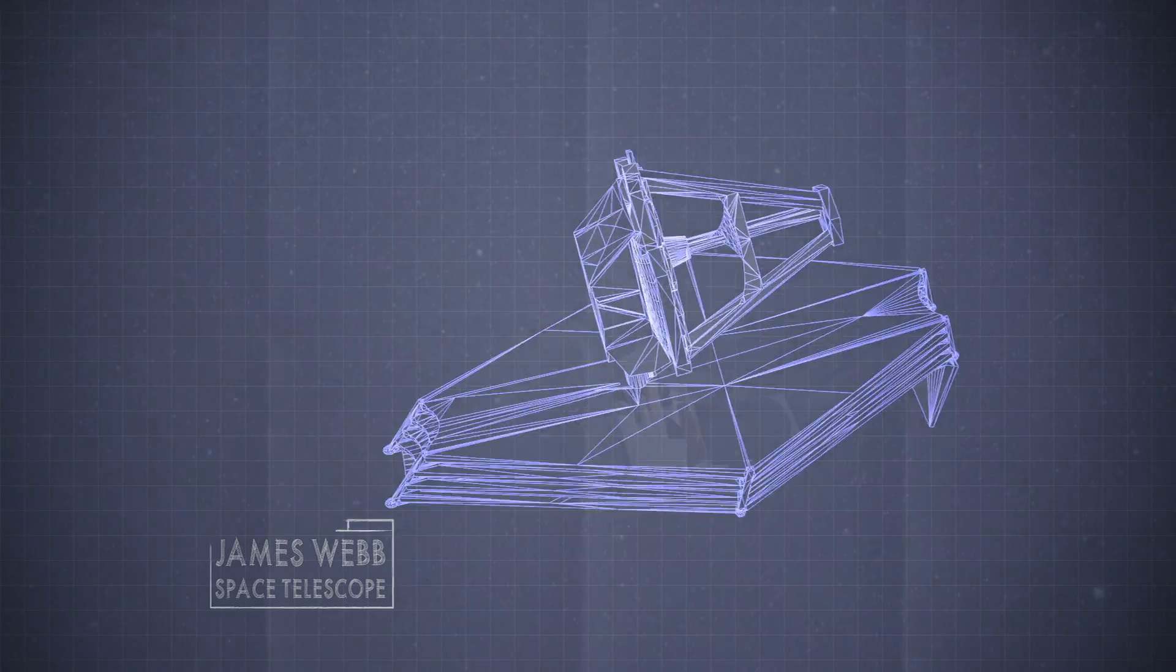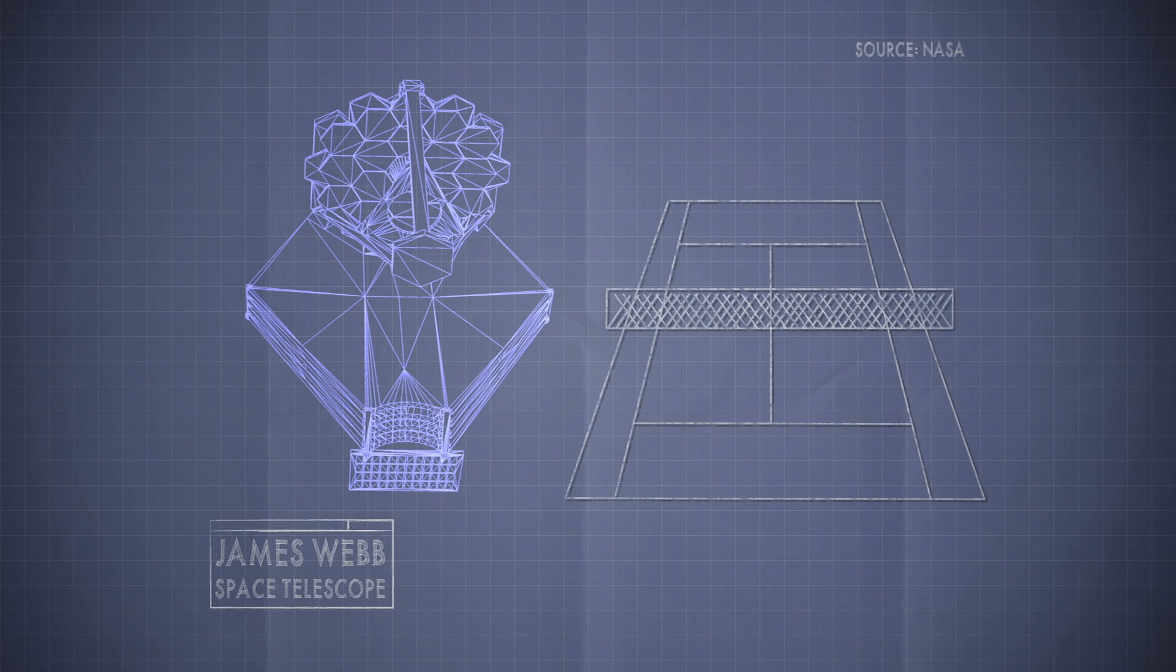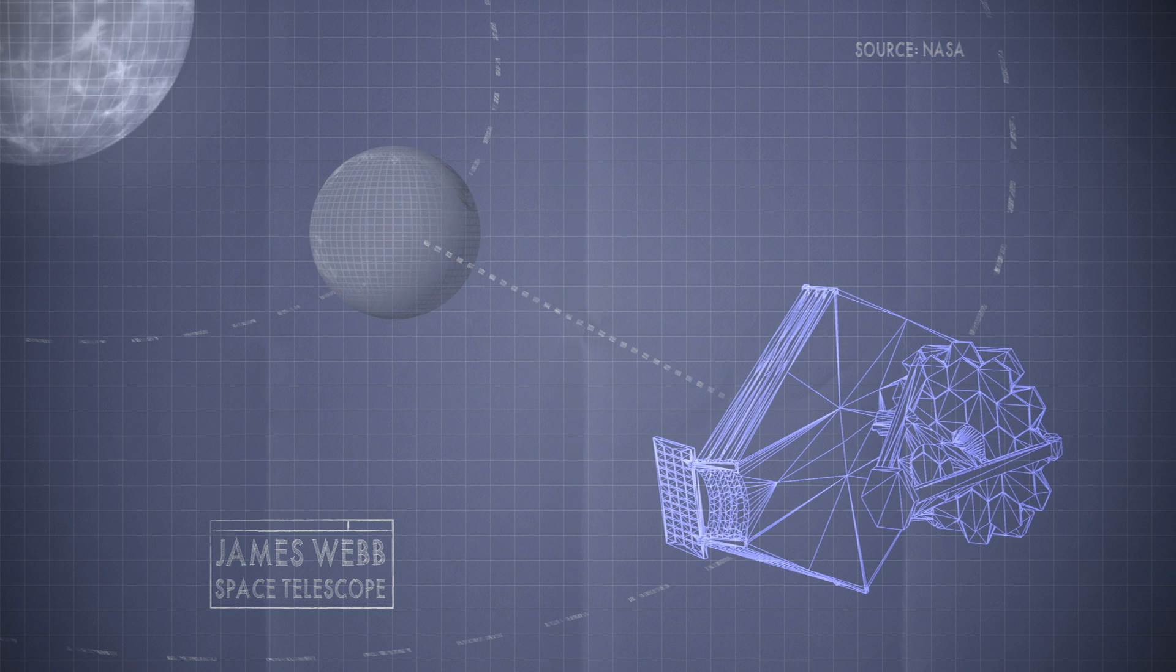Due to launch in 2018, it's the size of a tennis court. And it will orbit the sun one and a half million kilometers from Earth, protected by a vast foil sunshield.